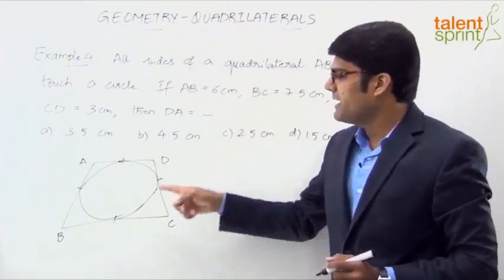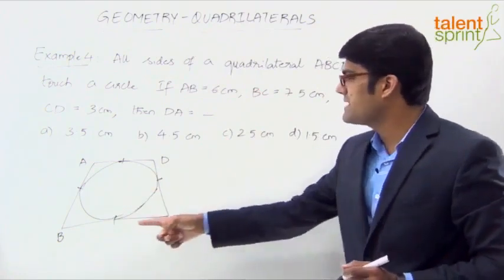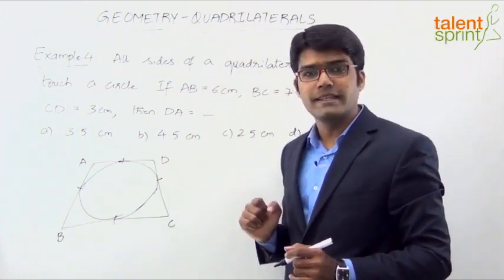And the dimensions have been given. We know that AB is 6, BC is 7.5, CD is 3. We are required to find out DA.